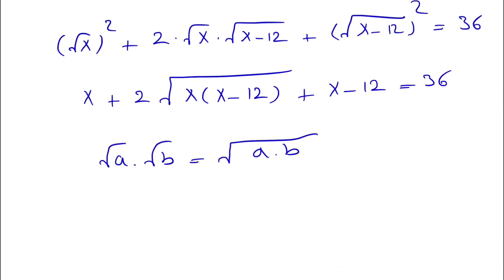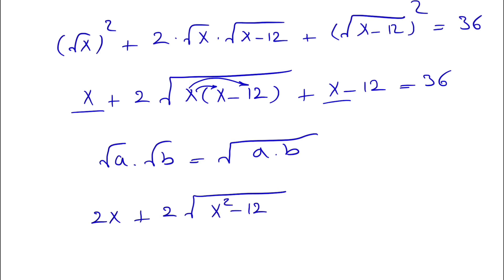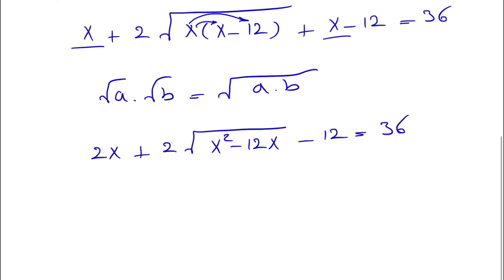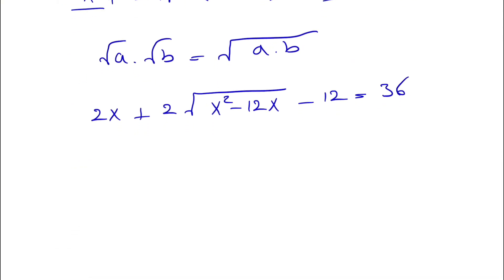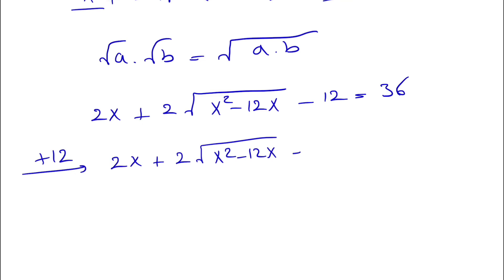Simplifying, we combine the x terms: 1x and another 1x gives 2x, so we have 2x plus 2√(x²−12x) minus 12 equals 36. Adding 12 to each side gives us 2x plus 2√(x²−12x) equals 48.